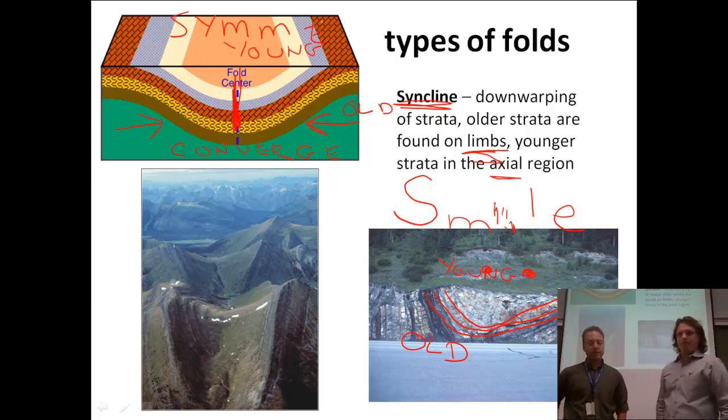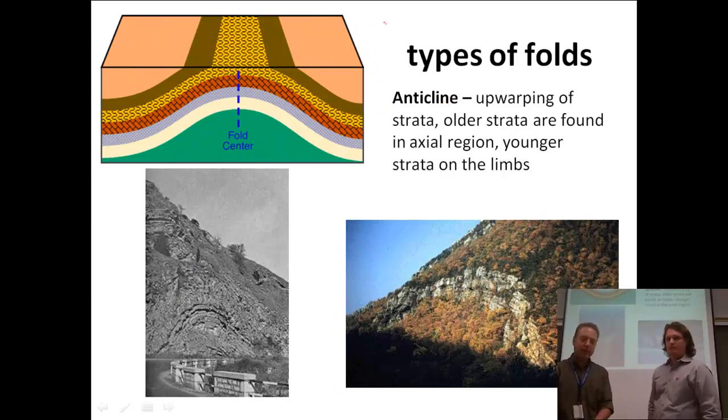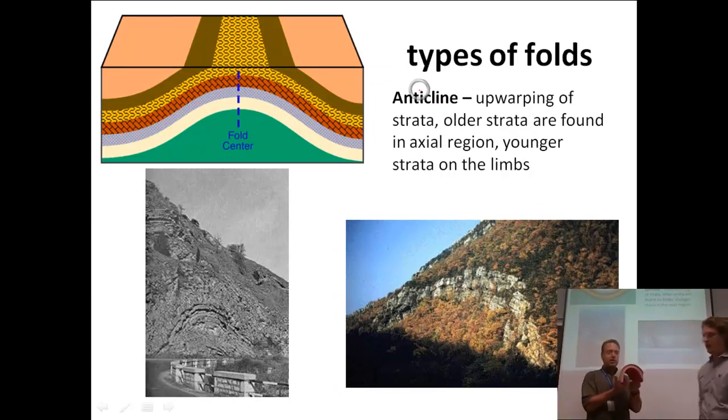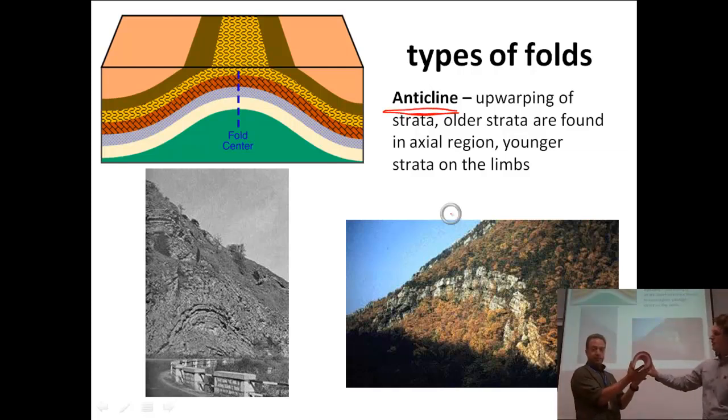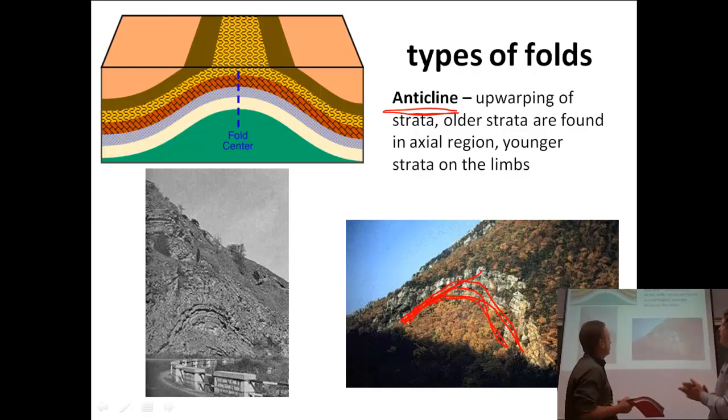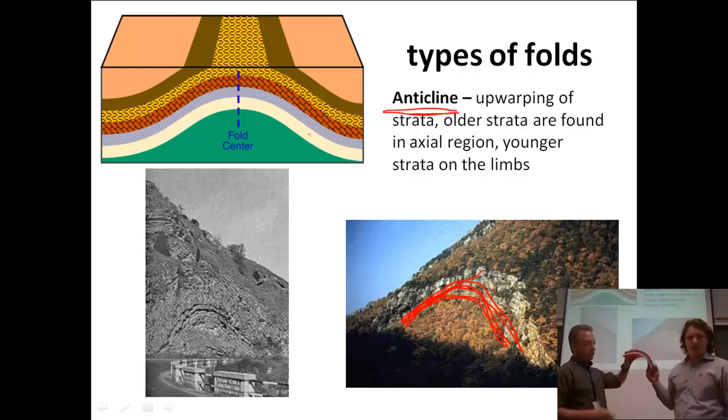Let's see our next slide. This one looks like the letter A. Maybe that's a way you can remember this one. Like, instead of a smile, you've got an A. And that's the anticline. So let's go ahead and take a look at this definition. Upwarping of strata. Older strata are found in the axial region. Younger strata are found on the limbs. So let's take a closer look at that.